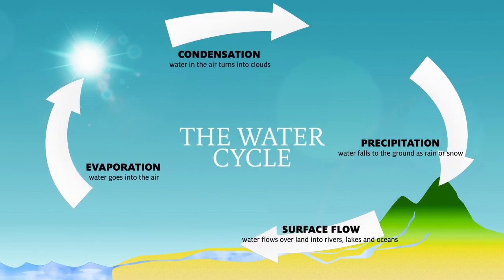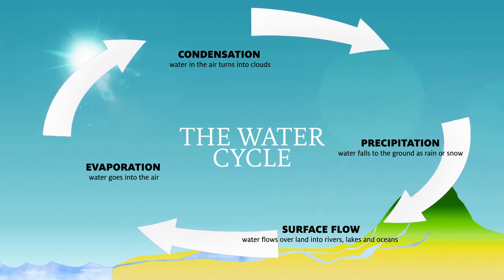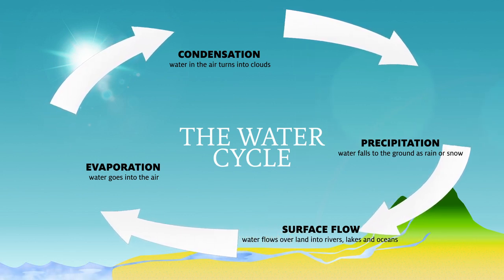Over time, all the water on Earth goes through this cycle, from air to land, gas to liquid, over and over. That's the simple version of the water cycle.